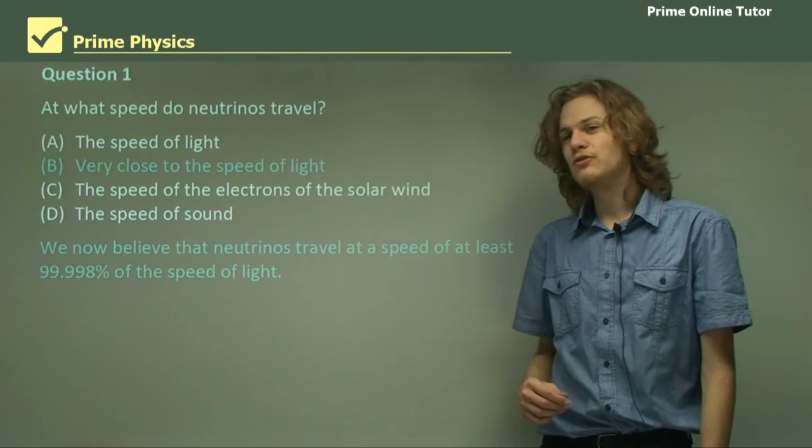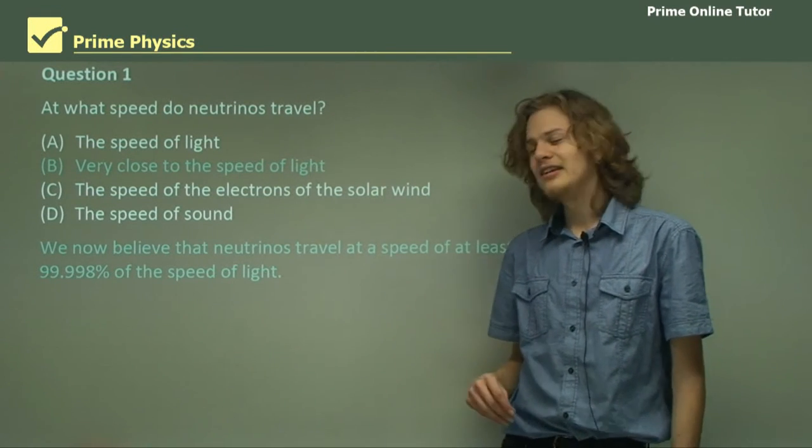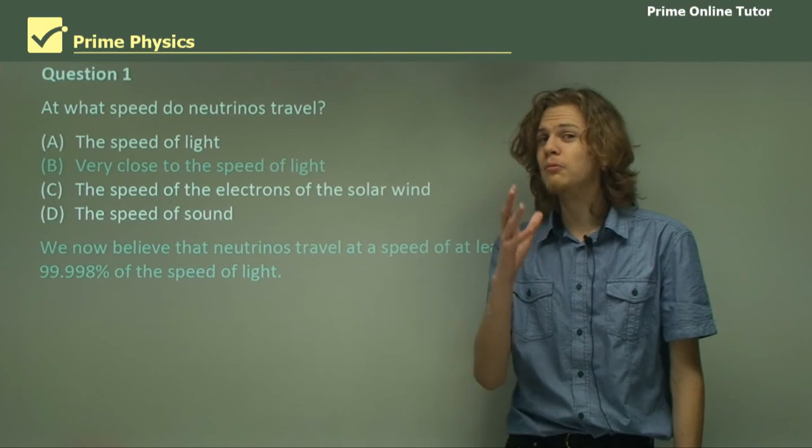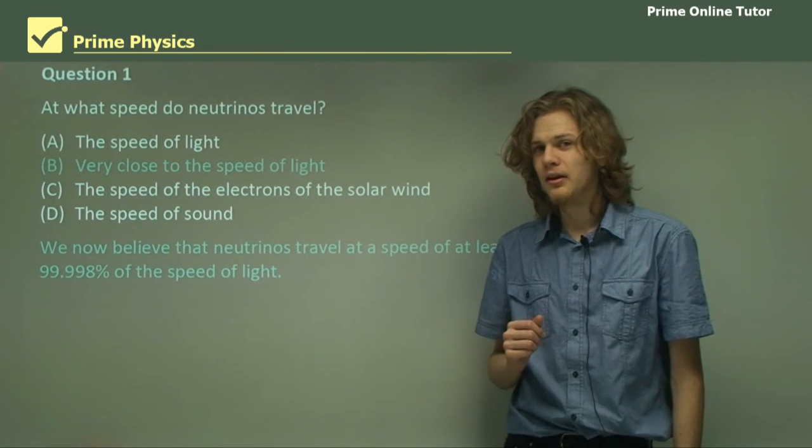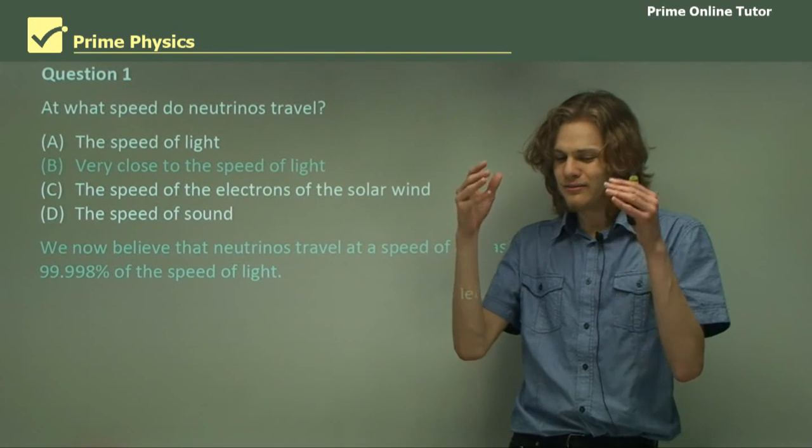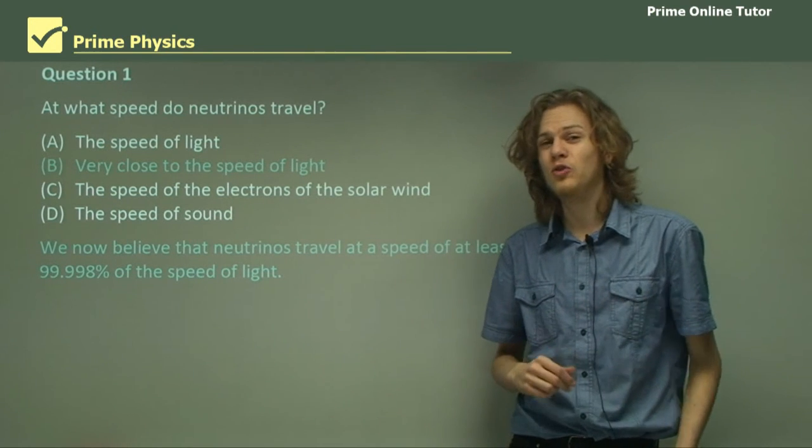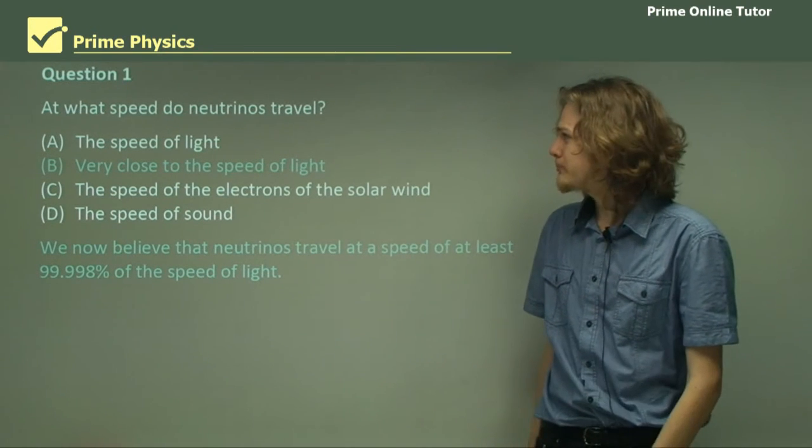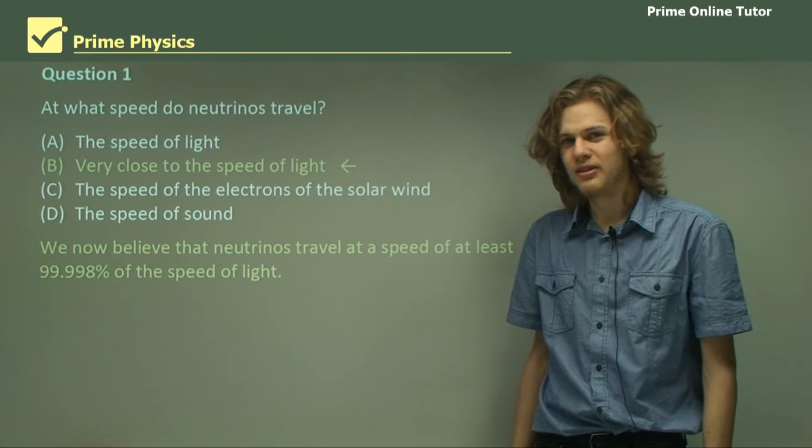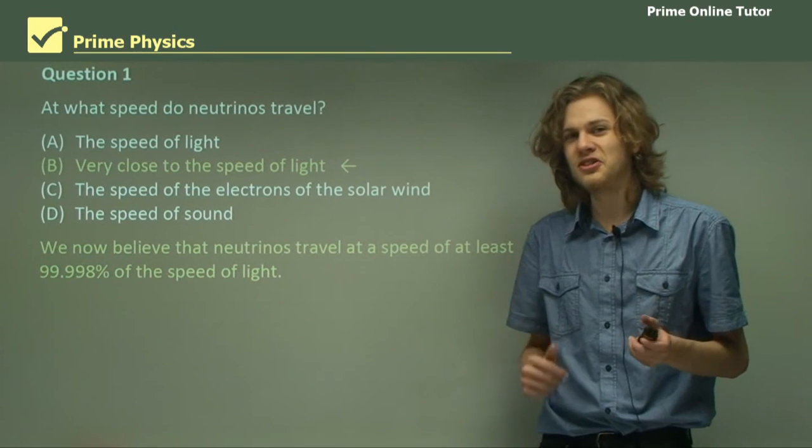But now that we've discovered that they probably have mass, it turns out that they can't travel at the speed of light. So they must travel very close to the speed of light. Current estimates say that they travel at at least 99.998 percent of the speed of light, and probably faster than that. We can see that B is the correct answer, as our current knowledge of physics states.